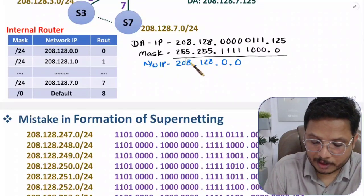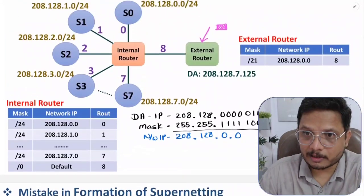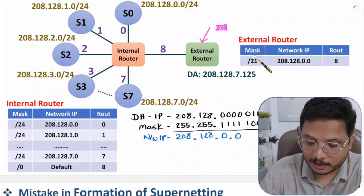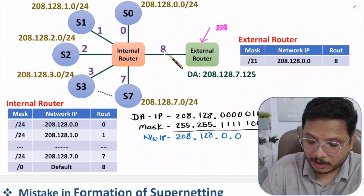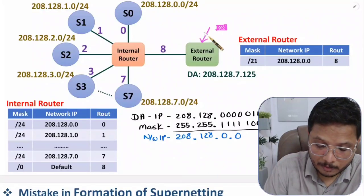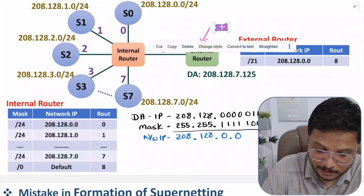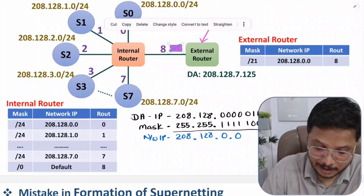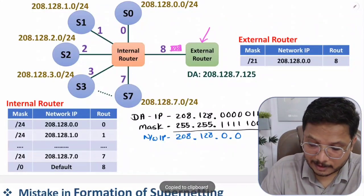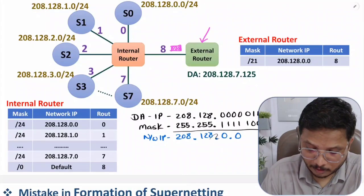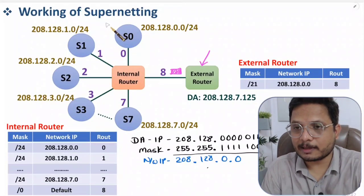After applying the supernet mask, the resulting network IP matches the entry in the external router, so the frame is forwarded to interface 8 and routed to the internal router. That is how working happens with supernetting.